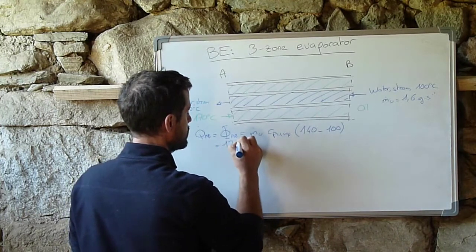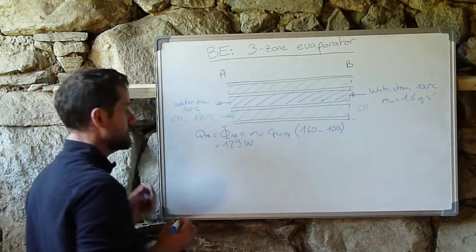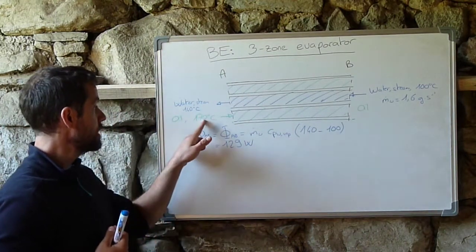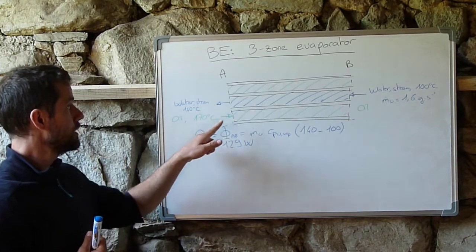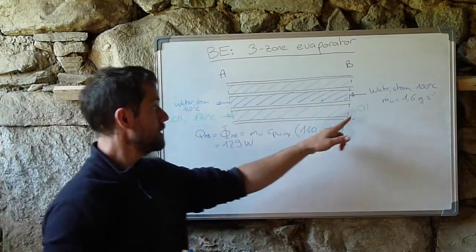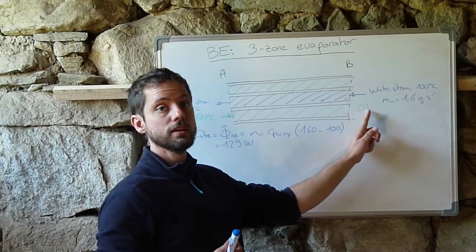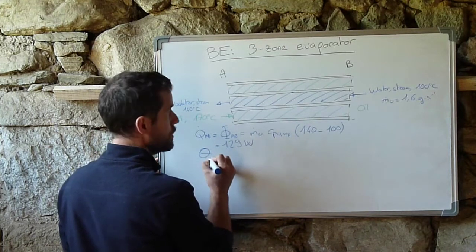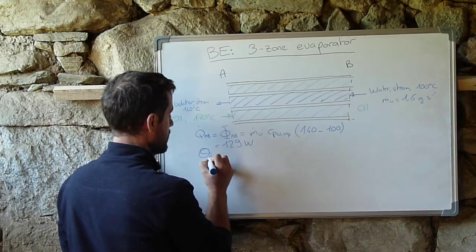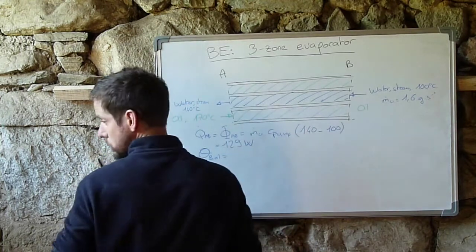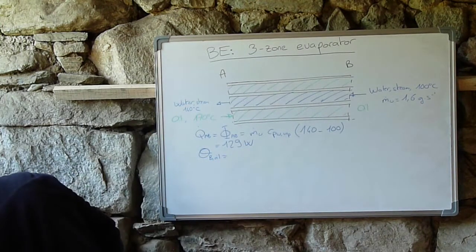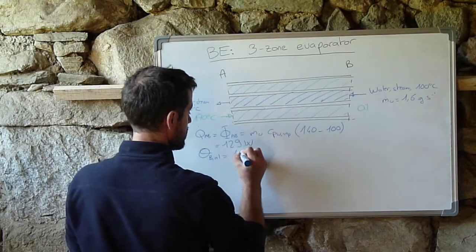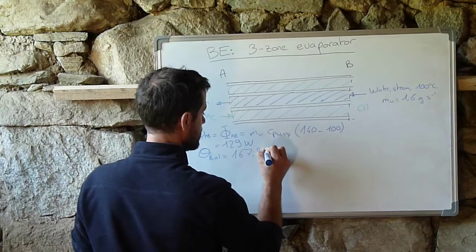So if you calculate, you have 129 watts for this first section. Once you know the heat flux, you can also do a heat balance of the oil that will be cooled down a little bit in this section in order to calculate the outside temperature of the oil. And if you do this, the temperature at point B for the oil is equal to 167.8 degrees Celsius.